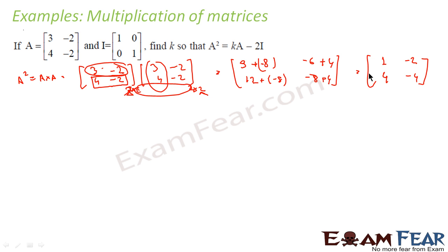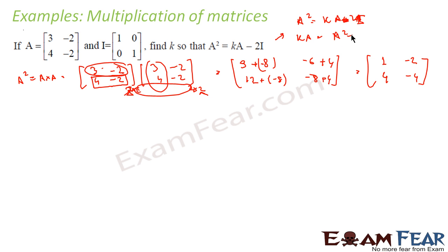So this is my A². I have been told that A² = kA - 2I, or equivalently kA = A² + 2I. We will find A² + 2I, and with that we'll have one matrix on each side, compare them, and find the value of k. So kA = A² + 2I.